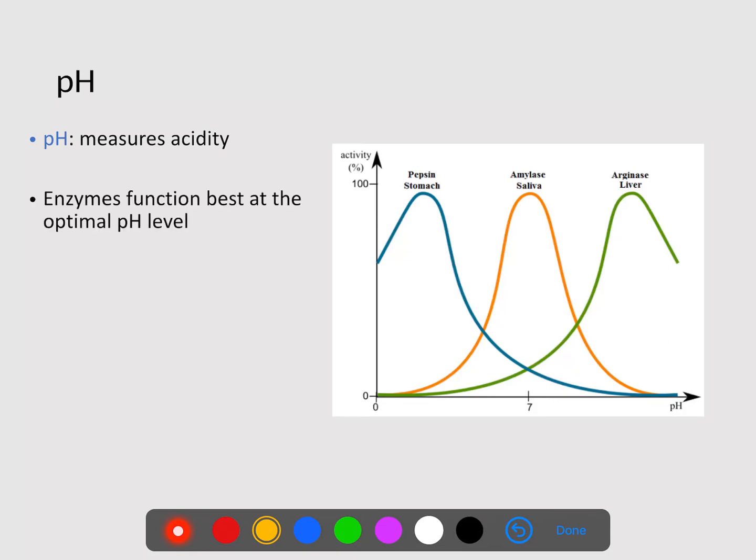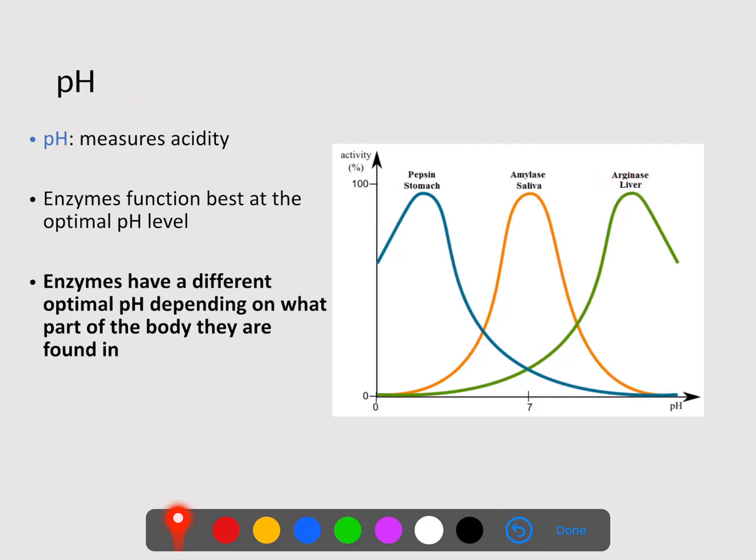Now, pH measures acidity and enzyme function works best at the optimal pH. So what you see here are three different enzymes: pepsin, which occurs in your stomach; amylase, which is in your saliva; and arganase, which is in your liver. What you'll see is that enzymes have a different optimal pH depending on the part of the body they are found.